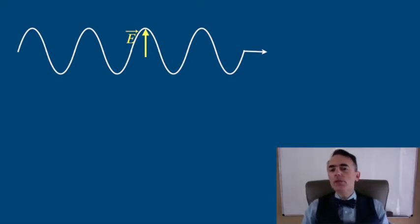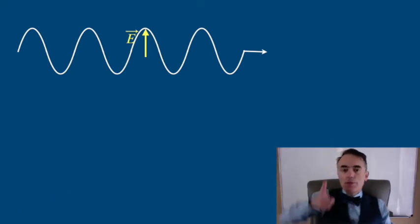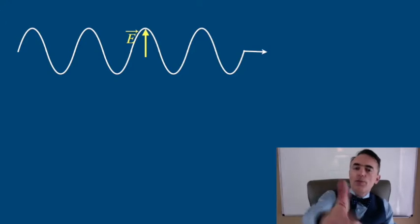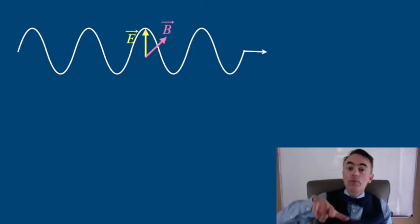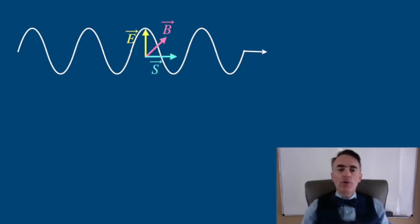Remember that the E field is perpendicular to the direction of propagation, just as the B field that is perpendicular to the direction of propagation and to the electric field.